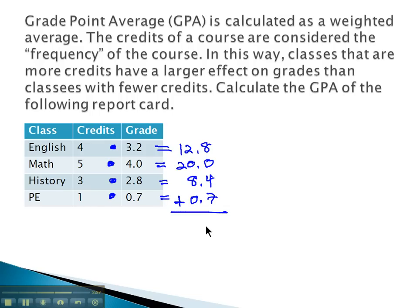When we add these all together, we'll get our sum of how many points this student has earned this quarter. Add them all up and we'll get 41.9 for the number of points this student earned.